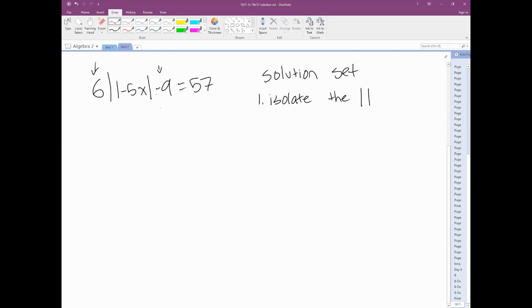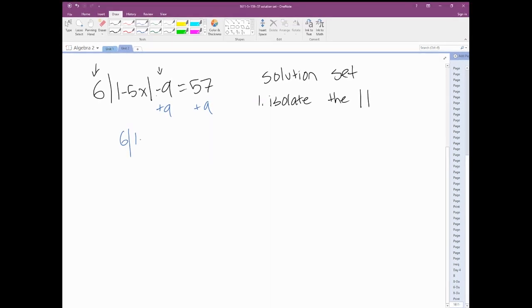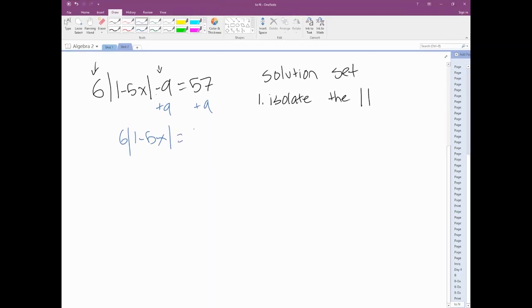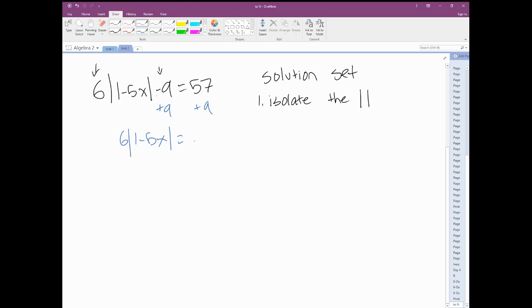If this is being subtracted, we're going to add it. We're going to add 9 to both sides and get 6 absolute value of 1 minus 5x equals 66.